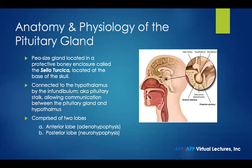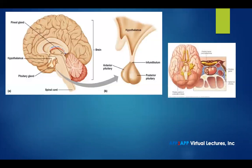There are two lobes comprising the pituitary gland — both an anterior lobe, known as the adenohypophysis, and the posterior lobe, known as the neurohypophysis. This is a cross-sectional diagram demonstrating the anatomy. You have the anterior lobe, posterior lobe of the pituitary gland, your pituitary stalk, and your hypothalamus. This is a closer view of that same demonstration.